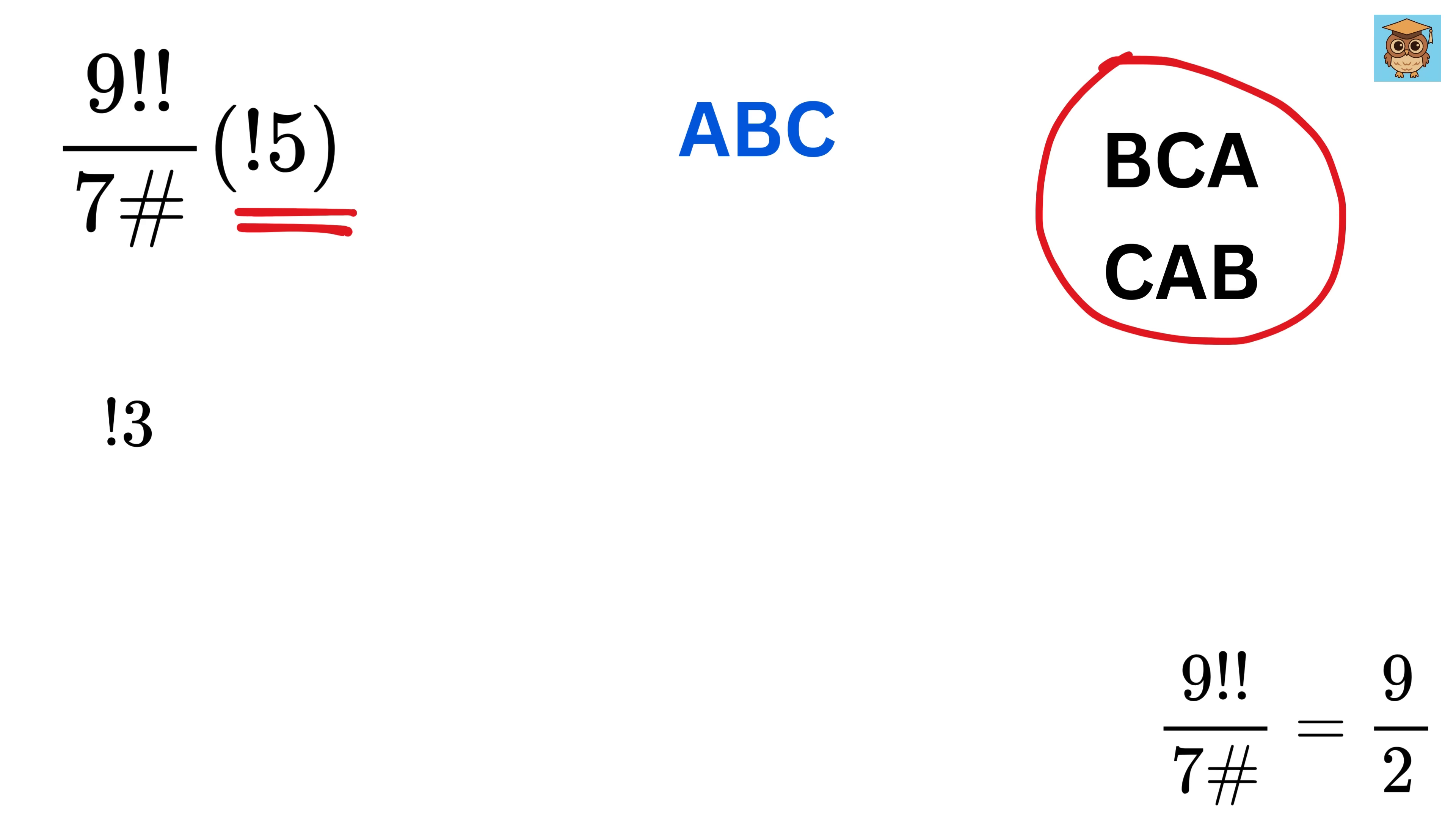In case of 3 sub-factorial, write 1 over 0 factorial minus 1 over 1 factorial plus 1 over 2 factorial minus 1 over 3 factorial. Now we solve each term. 1 over 0 factorial is 1. 1 over 1 factorial is 1. 1 over 2 factorial is 1 divided by 2. 1 over 3 factorial is 1 divided by 6. 1 minus 1 is 0. Then 1 divided by 2 minus 1 divided by 6 gives us 1 divided by 3.